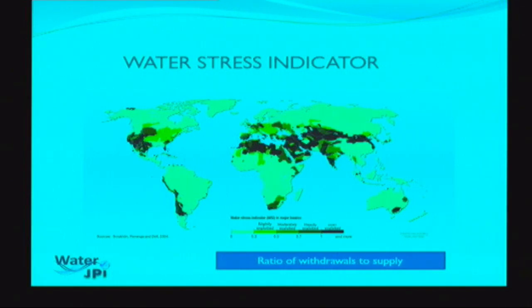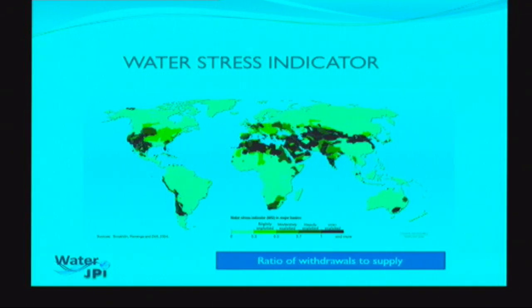The water stress indicator — the ratio between withdrawals and supply — shows this tendency clearly, even in Europe. From northern to southern Europe, we can have heavily exploited situations where 80 to 100 percent of resources will be exploited in the future.